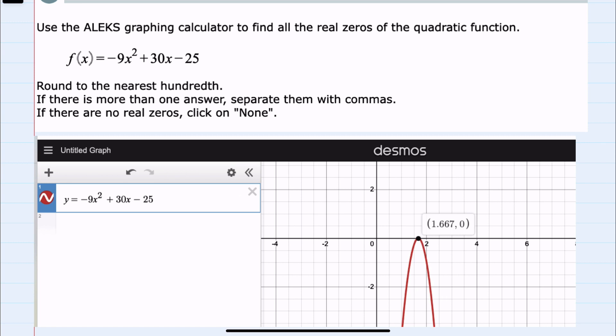For this example, it does cross once, so we see the zero where it barely touches the y-axis is at 1.667, but we were asked to round to the nearest hundredth, so I would round that number to 1.67.